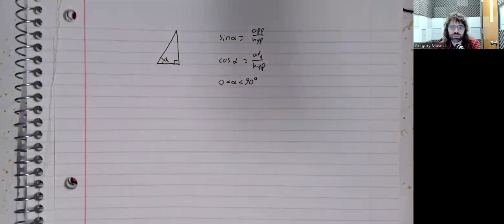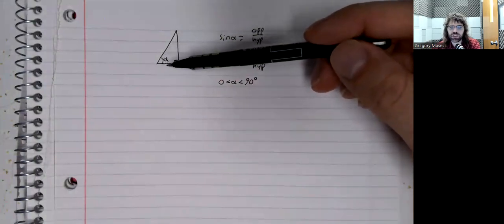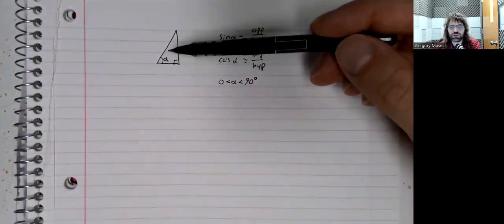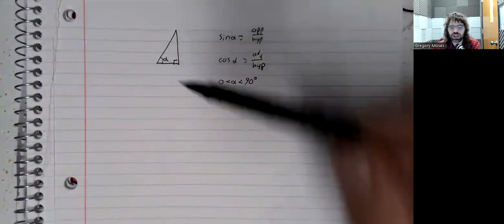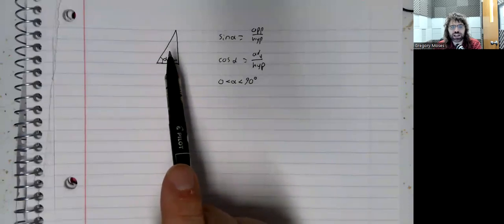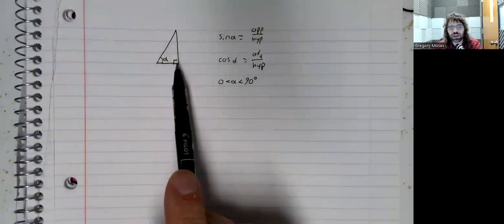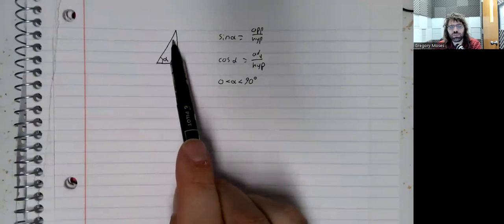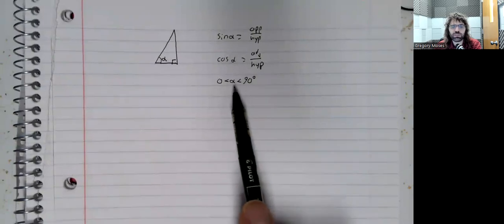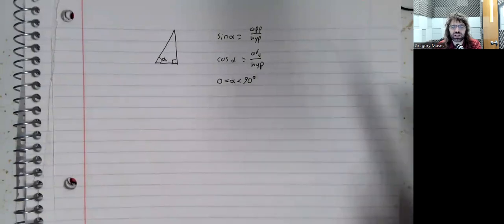But this angle alpha is stuck between zero and 90 degrees. This angle is positive - the angles of a geometric shape are always going to be positive. It's less than 90 degrees because the angles of a triangle add up to 180 degrees. So this 90 degree angle plus alpha plus this angle up here gives you 180, and that can only happen if alpha is less than 90.